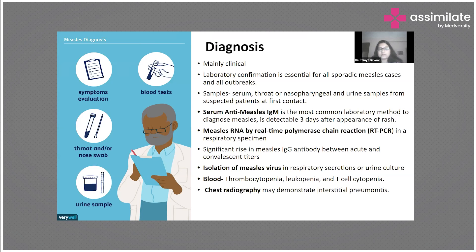We can also isolate the measles virus in urine culture, but this is not very commonly done — usually only for research purposes. For day-to-day clinical usage, the anti-measles IgM antibody is most important, easily done by blood sample, or RT-PCR using a nasopharyngeal or throat sample. In children with measles, blood tests can show low platelet counts, low WBC counts, and low T-cell counts. If there are pulmonary complications, a chest X-ray can show interstitial pneumonitis.